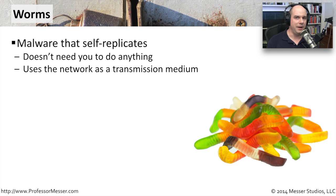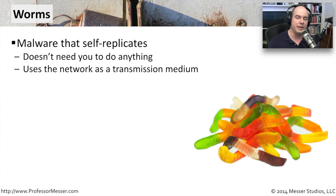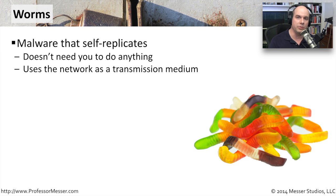Worms are a special kind of virus. Up to this point, we've talked about viruses being executed when you clicked on something or ran a program. Worms don't need you though — they can propagate themselves all over the network by themselves. All your computer has to do is be turned on, and the worm can take advantage of that. Generally, it exploits a vulnerability identified in the operating system, gets access to your computer, embeds itself, and then hops to another computer.